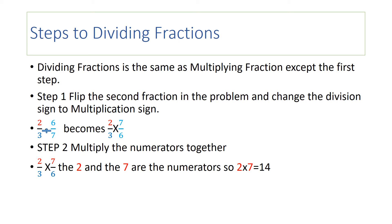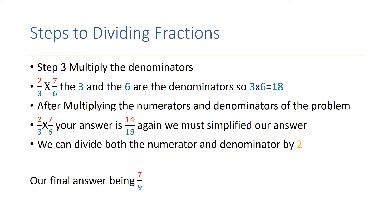Step two: multiply the numerators together. Just like before, two and seven are numerators, so two times seven equals fourteen. Step three: multiply the denominators. In this problem, three and six are the denominators, so three times six equals eighteen. After multiplying the numerators and denominators of the problem two-thirds times seven over six, your answer is fourteen over eighteen.